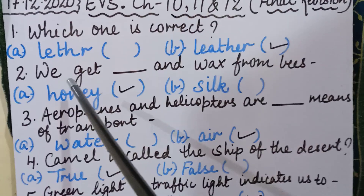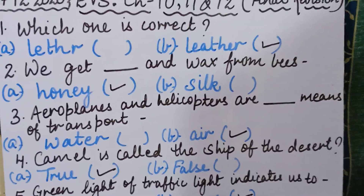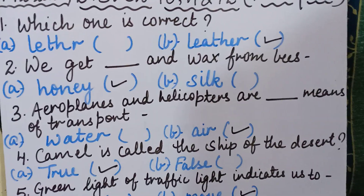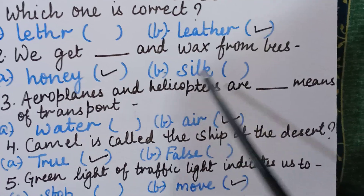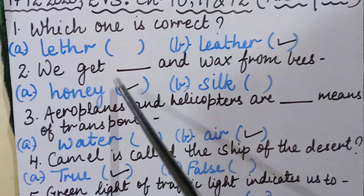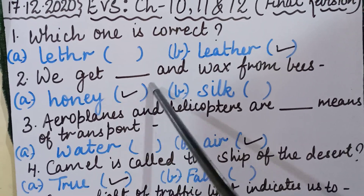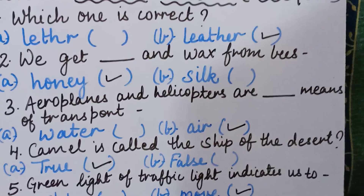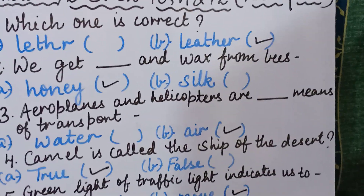Second question: we get dash and wax from bees. Is it honey or silk? The correct answer is honey. We get honey and wax from bees, so we will put a tick in front of honey. Silk we get from silkworm.